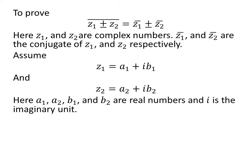To prove the above identity, let us assume z1 is equal to a1 plus i times b1, and z2 is equal to a2 plus i times b2. Here, a1, a2, b1, and b2 are real numbers and i is the imaginary unit.